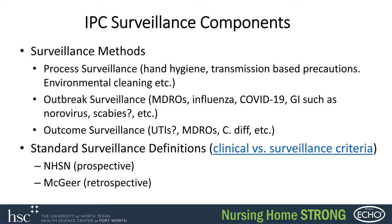There are different surveillance definitions out there. NHSN tends to be more prospective — you can use the system to prospectively keep an eye on things. And then there's the McGeer criteria as well, which tends to be used more retrospectively.